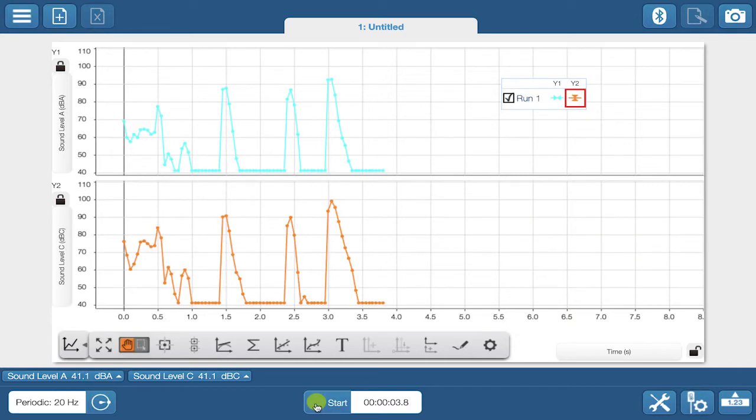Oh, you're right. The DBA weighting is different because it mimics the response of the human ear to different sound frequencies. That could be important for monitoring safe environmental sound levels.